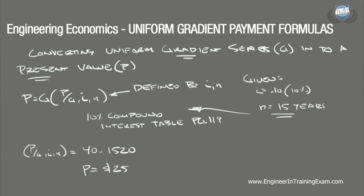Plugging this value into the equation, we get P equals $250 times 40.1520, which equals $10,038. So this company should set aside $10,038 now to ensure they are able to pay the maintenance costs for this machine over its 15-year lifespan.